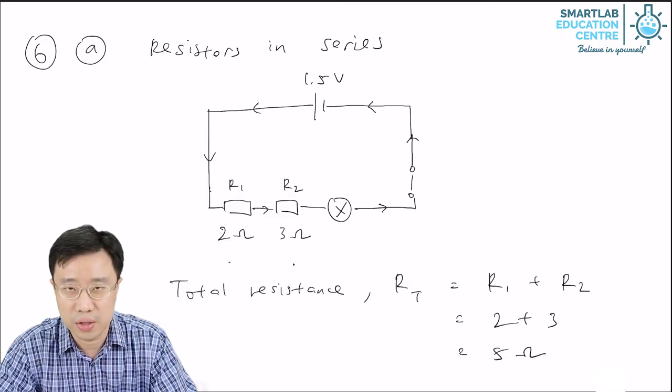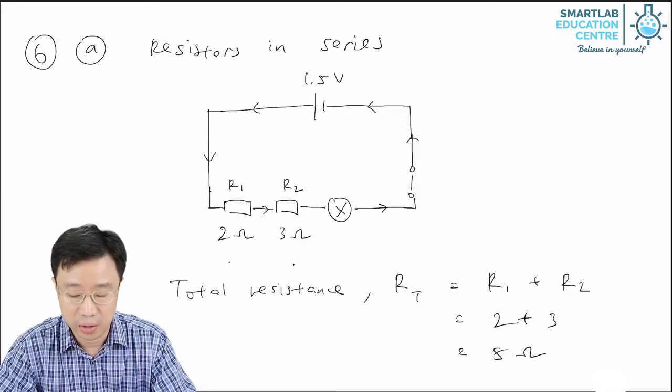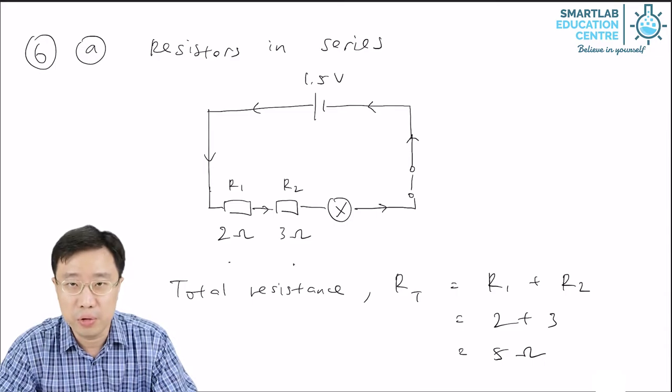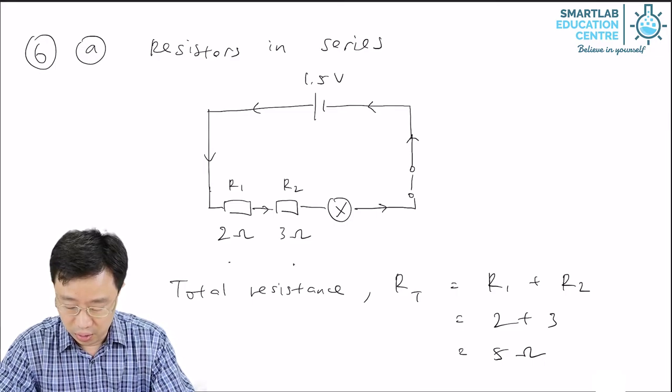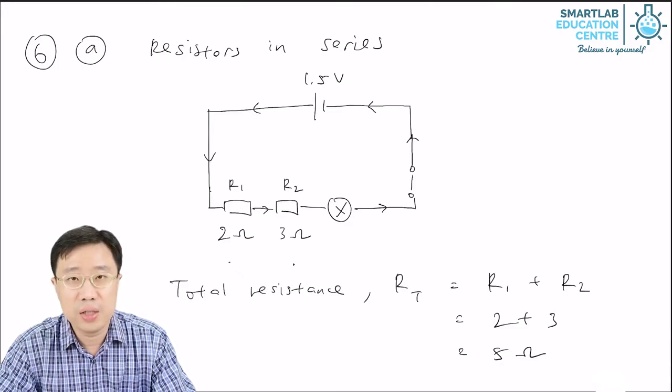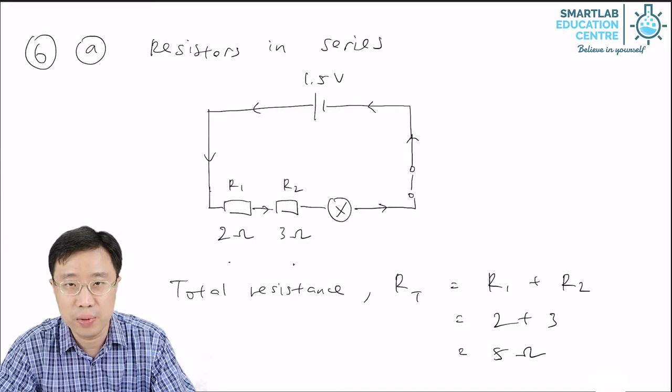So the total resistance for this case, I represent with a letter R with a small capital T written at the bottom. This total resistance is equal to R1 plus R2, which is 2 plus 3 equals to 5 Ohm.